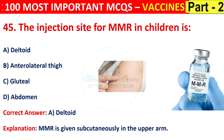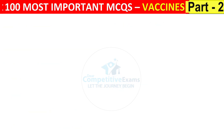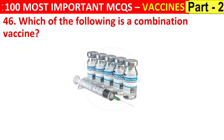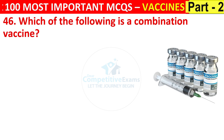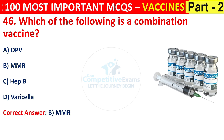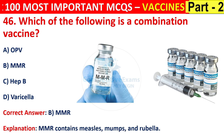Question number 46. Which of the following is a combination vaccine? Options are OPV, MMR, hepatitis B, or varicella. The right answer is B, that is MMR. MMR contains measles, mumps, and rubella components.